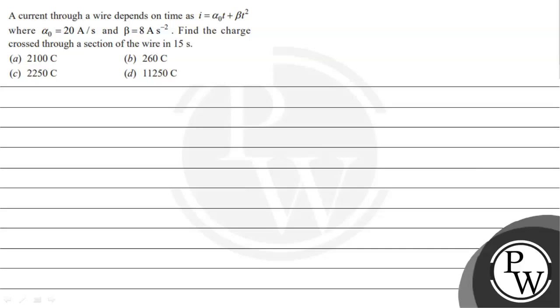Hello! Let's read the given question. A current through a wire depends on time as I = α₀t + βt², where α₀ = 20 ampere per second and β = 8 ampere per second squared. Find the charge crossed through a section of the wire in 15 seconds.